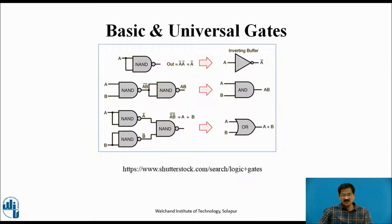The next basic gate is the OR gate — again, same A and B inputs, output is A plus B. On the top left you will find the NAND gate. Its Boolean expression is A dot B bar, meaning the NAND gate is a combination of an AND gate followed by a NOT gate. The AND gate output is A dot B, and after passing through the NOT gate, the NAND gate output is A dot B bar.